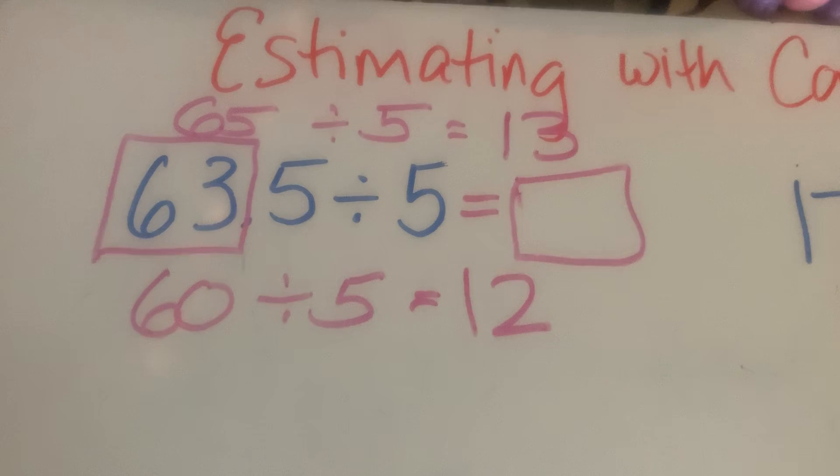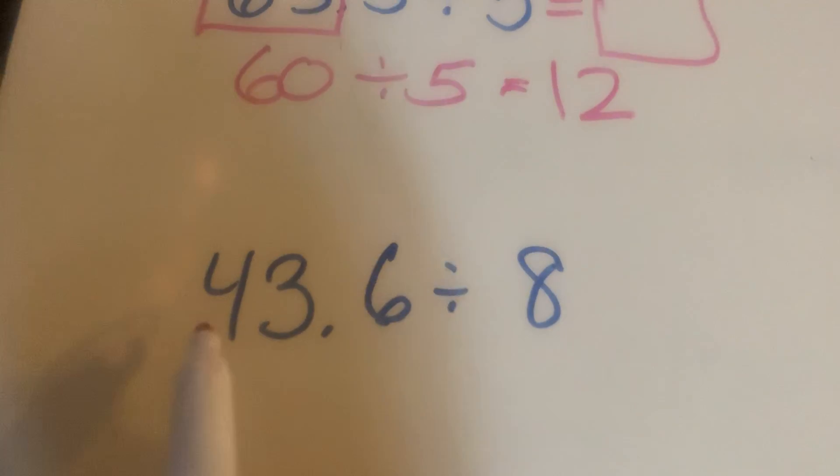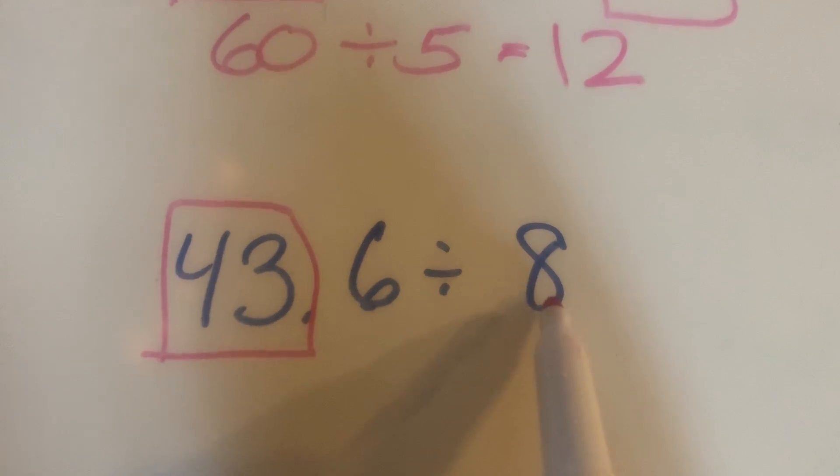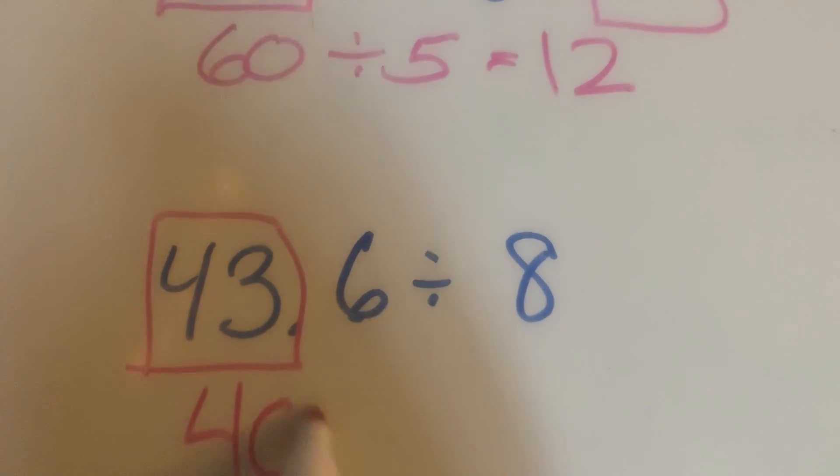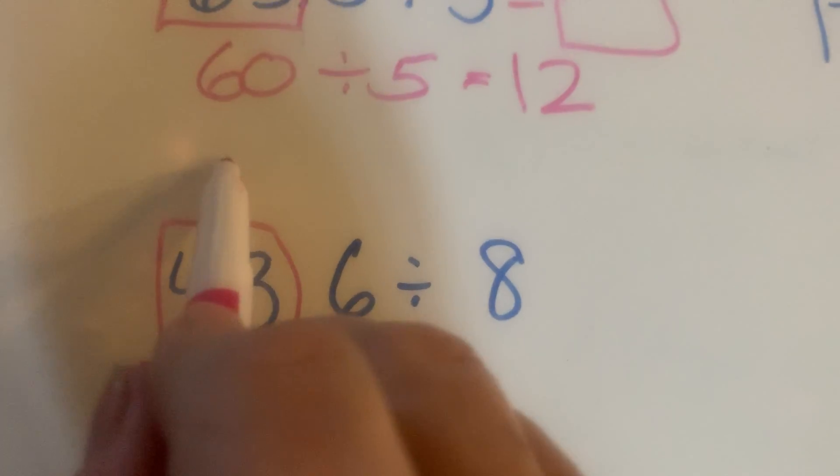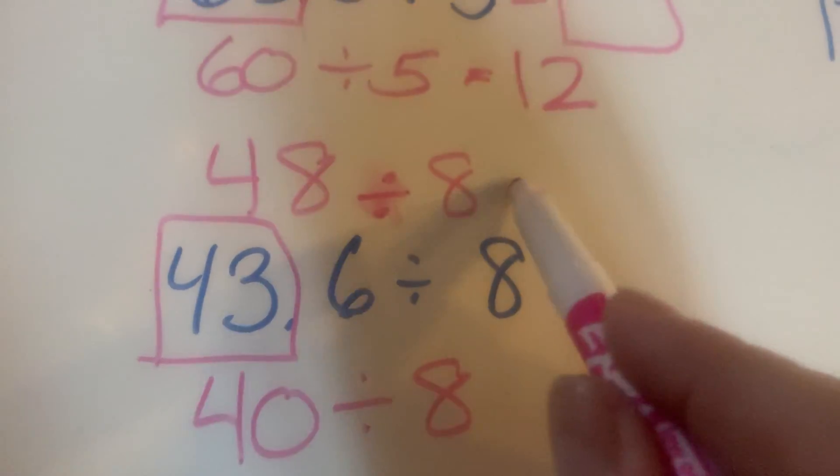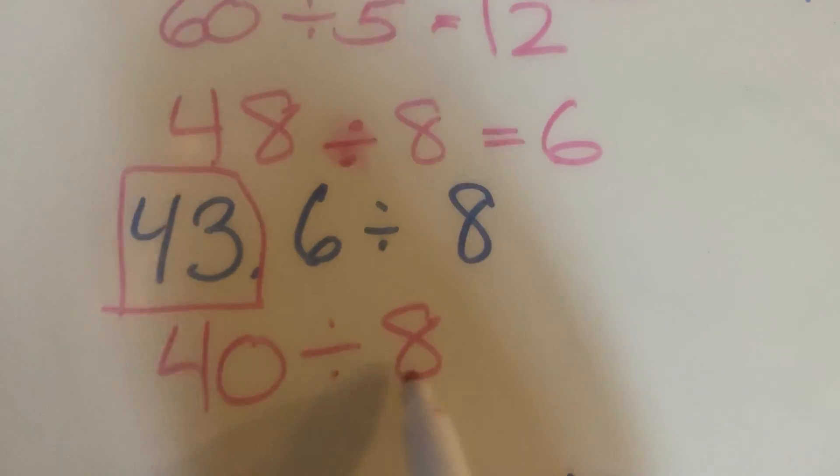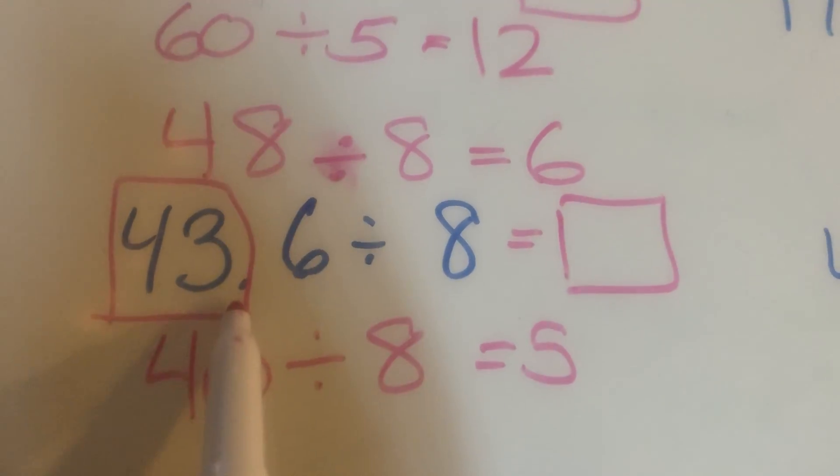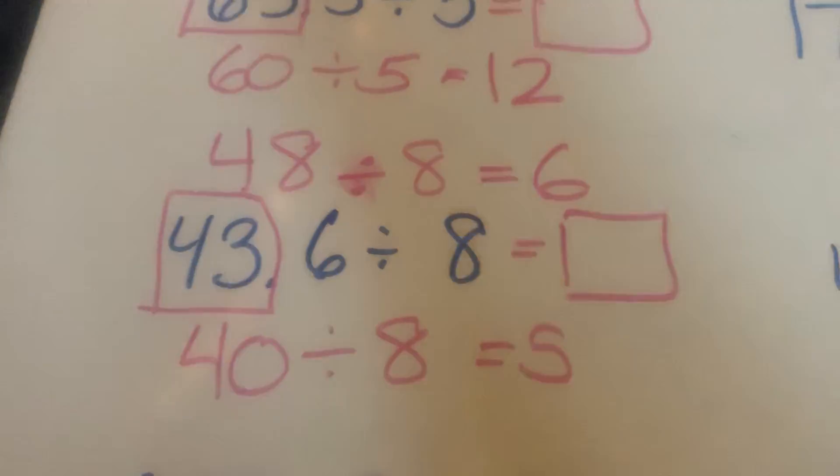The next one is 43.6 ÷ 8. I'll think about that whole number part and multiples of 8. I know 40 is a multiple of 8 for my low estimate, and the next multiple is 48. So 48 ÷ 8 = 6 and 40 ÷ 8 = 5. That way I know the answer to 43.6 ÷ 8 is going to be somewhere in the vicinity of 5 or 6.